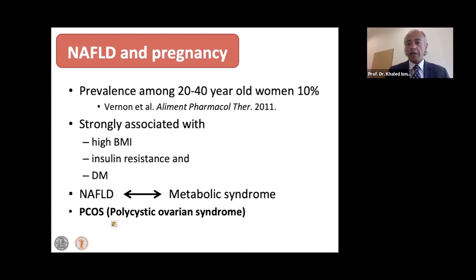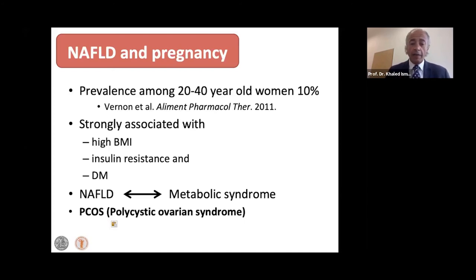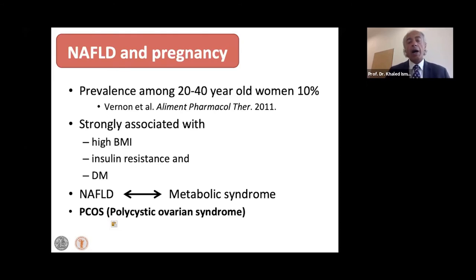Women with polycystic ovarian syndrome may complain of irregular periods or infertility, and when pregnant the risk of gestational diabetes is much higher, the risk of miscarriage is higher, the risk of preterm birth is higher, and the risk of pregnancy complications to them and the fetus is also high.